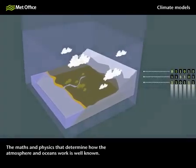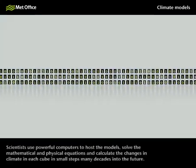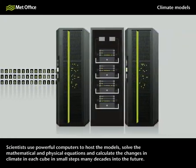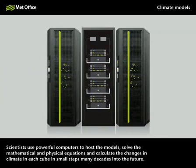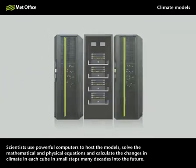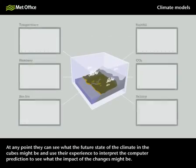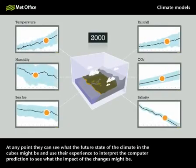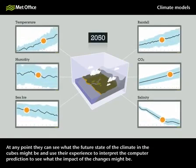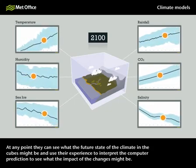The maths and physics that determine how the atmosphere and oceans work is well known. Scientists use powerful computers to host the models, solve the mathematical and physical equations and calculate the changes in climate in each cube in small steps many decades into the future. At any point they can see what the future state of the climate in the cubes might be and use their experience to interpret the computer prediction to see what the impact of the changes might be.